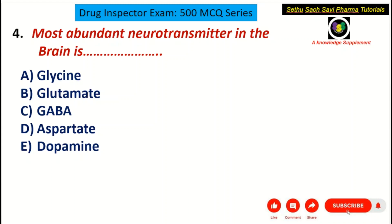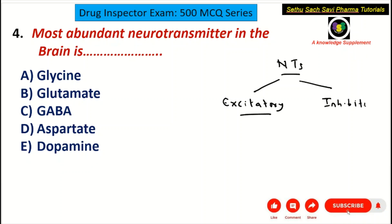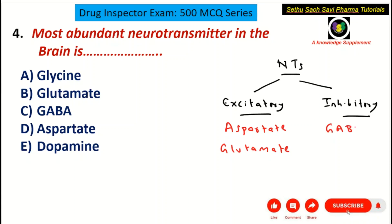The first thing you should know: among the neurotransmitters, some are excitatory neurotransmitters and some are inhibitory in nature. The examples for excitatory neurotransmitters are aspartate and glutamate. The examples for inhibitory neurotransmitters include GABA — gamma amino butyric acid — and glycine. Dopamine is both excitatory as well as inhibitory.